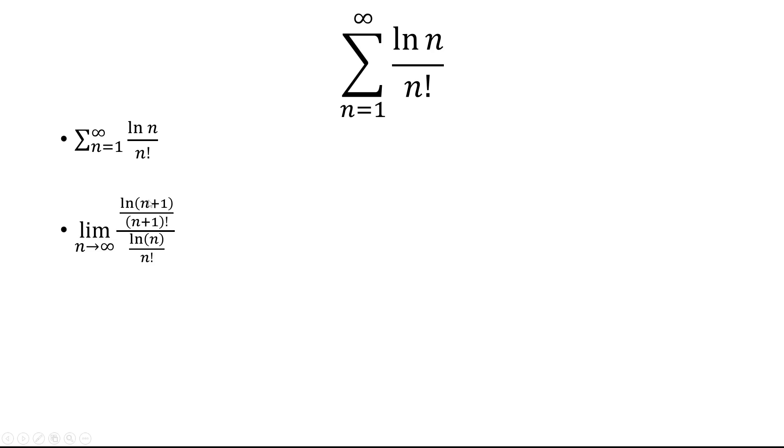So we'll look at the n plus first term over the nth term, and now we're going to separate this. So the natural log n plus 1 and the natural log n will go together, and then the n factorial with the n plus 1 factorial will go together.